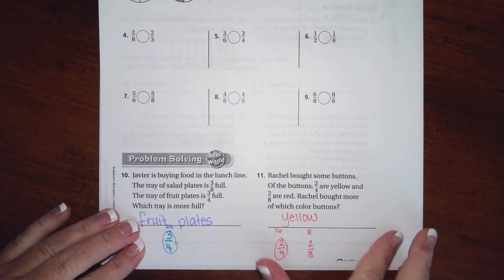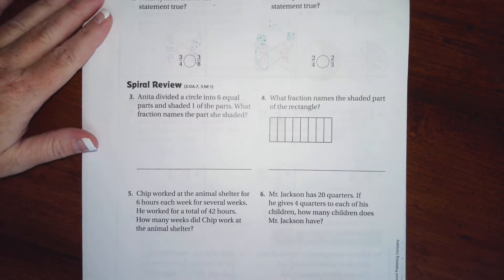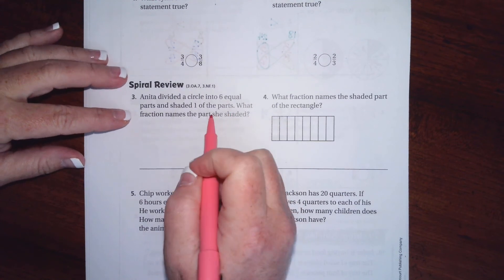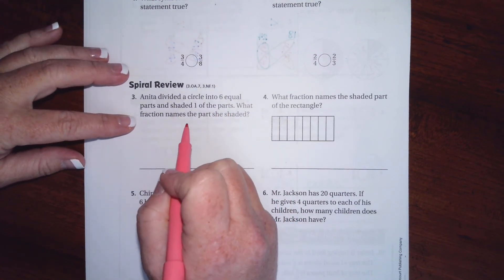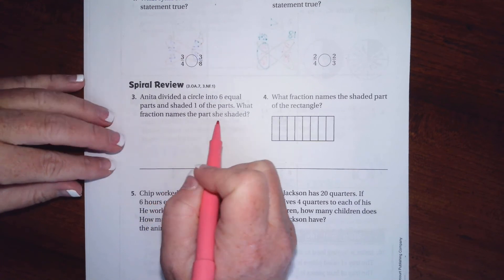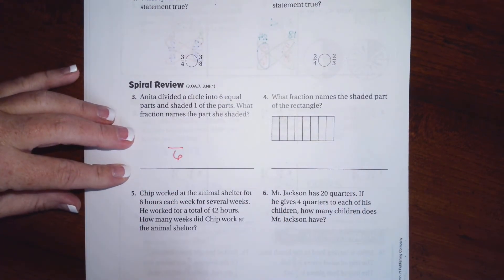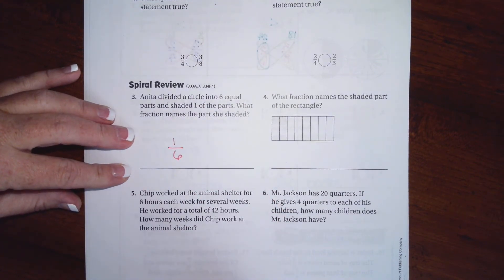All right guys, I'm going to the back where you guys are going to do a lesson check just like always, and we're going to go down and do a spiral review. It says I need to try to do a circle and do six equal parts. One of the parts - what fraction names the part she shaded? Well, she has six all together, so that's going to be our denominator. She only did one of them. That's it guys, you're done.